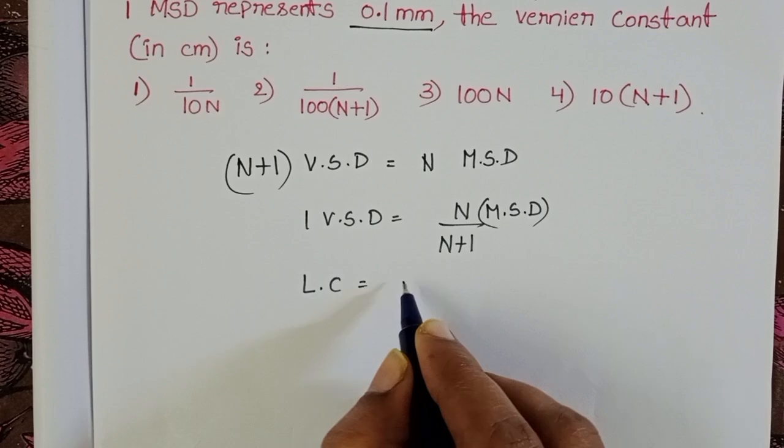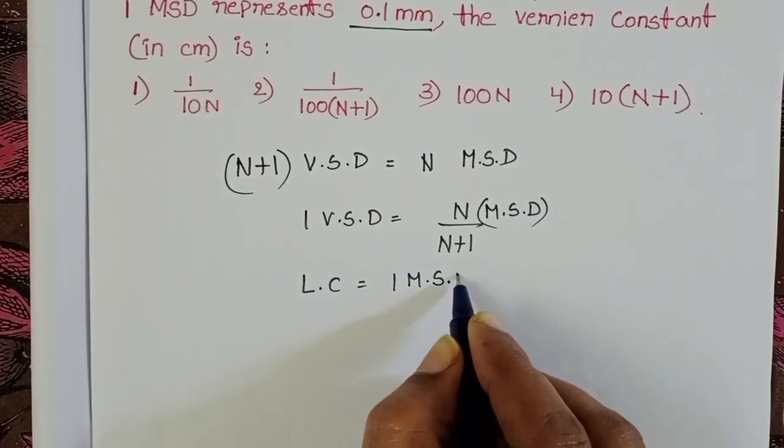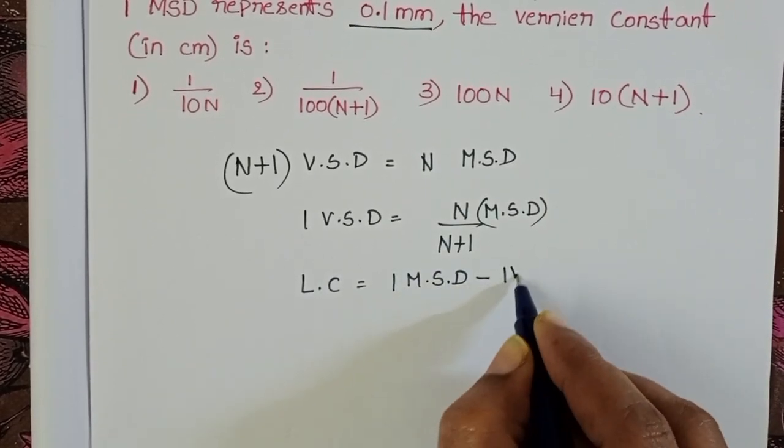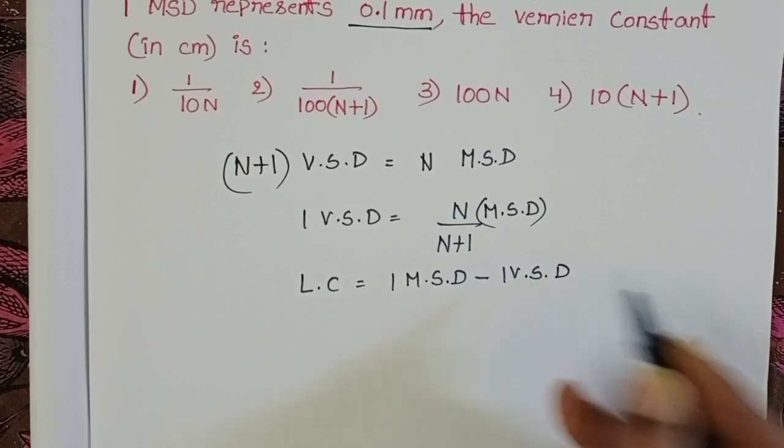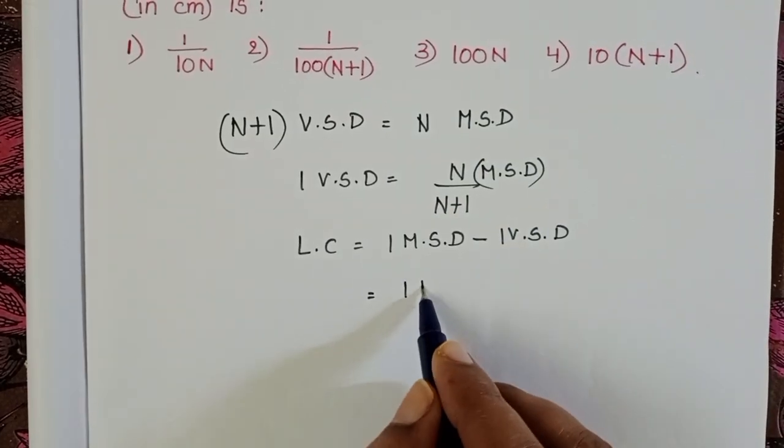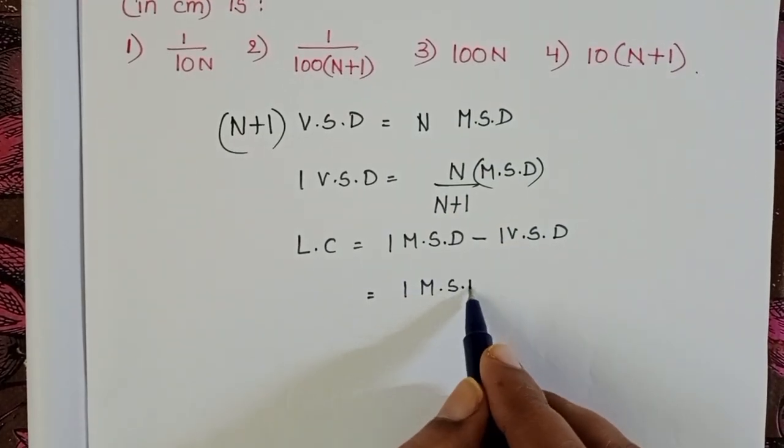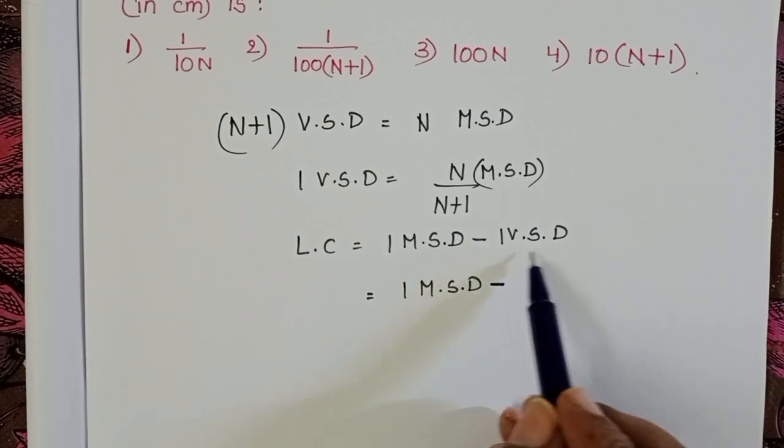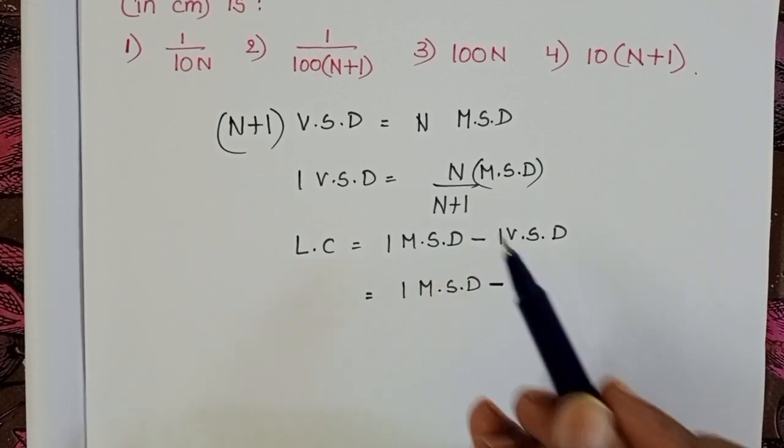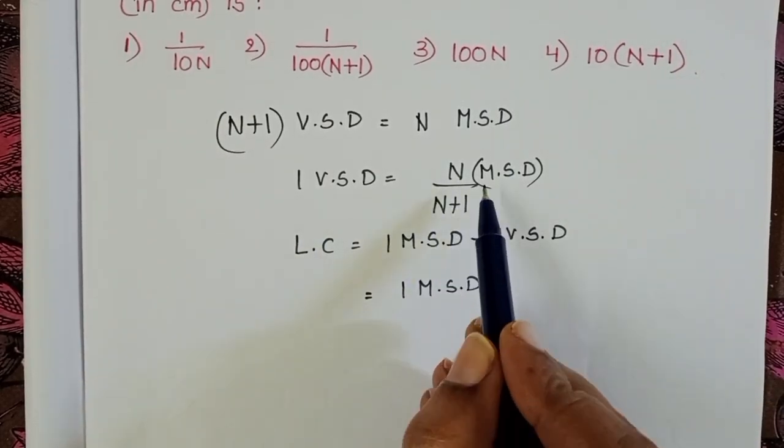Least count equals 1 main scale division minus 1 vernier scale division. 1 main scale division minus, in place of 1 vernier scale division, substitute n by (n+1).